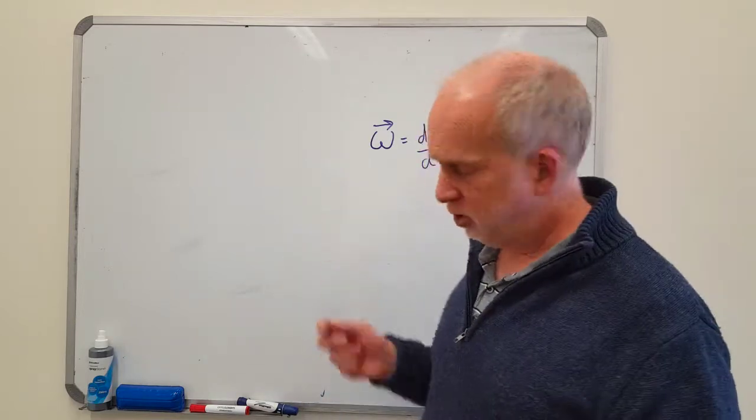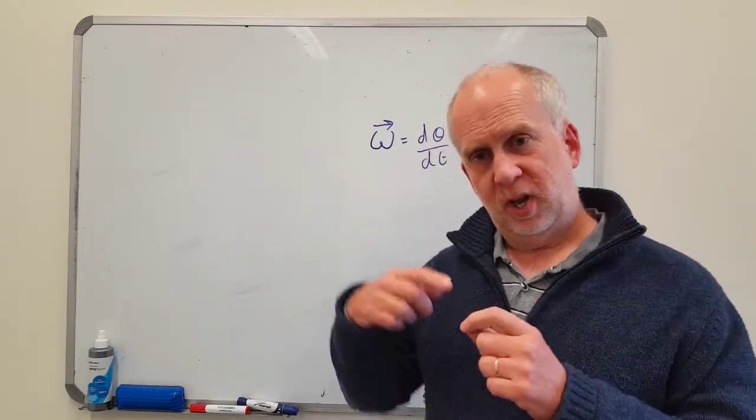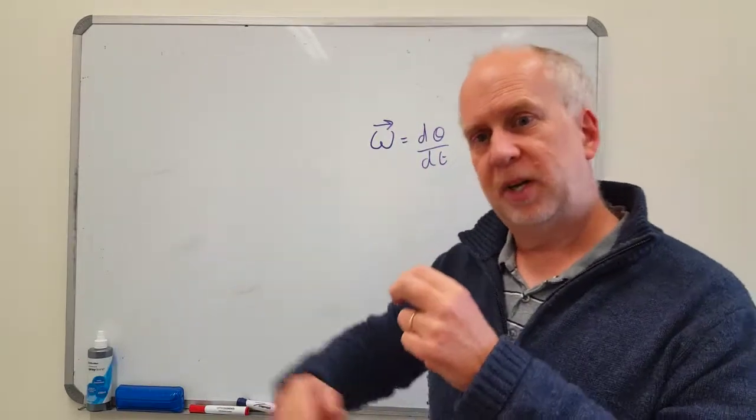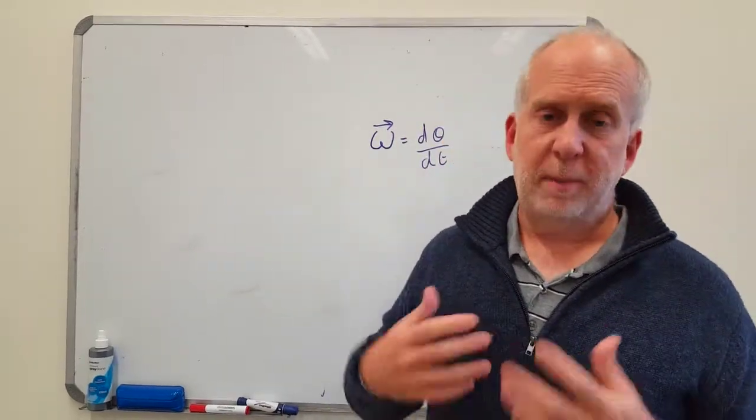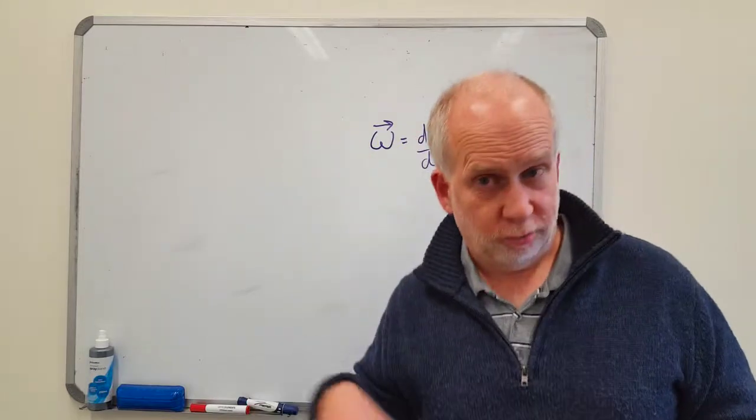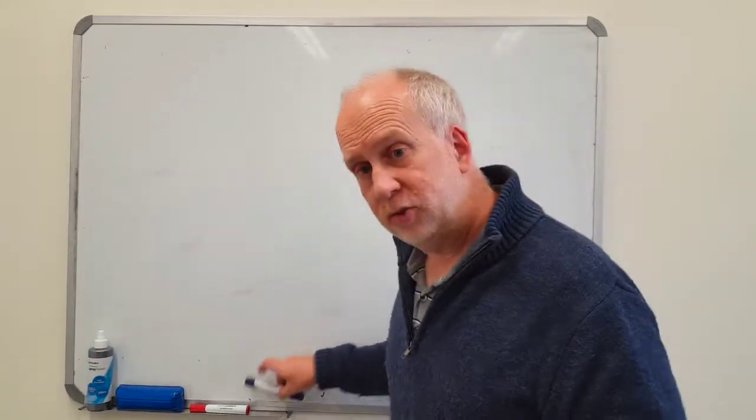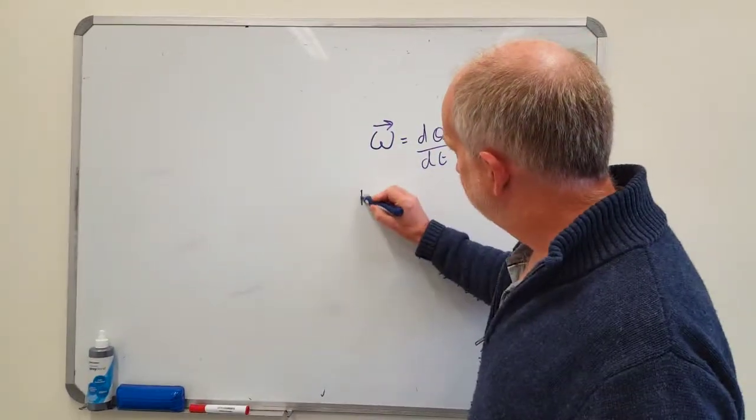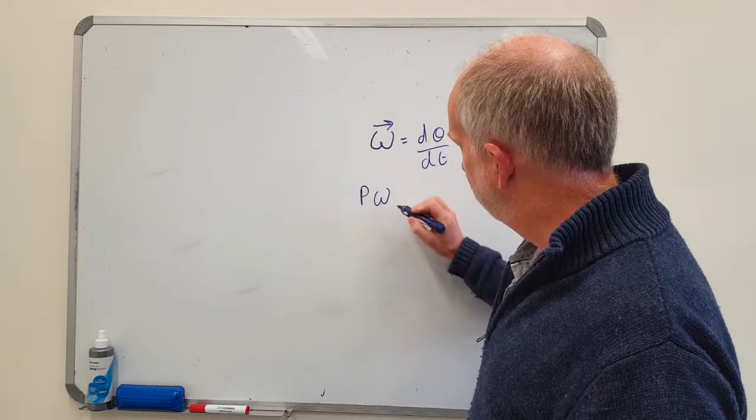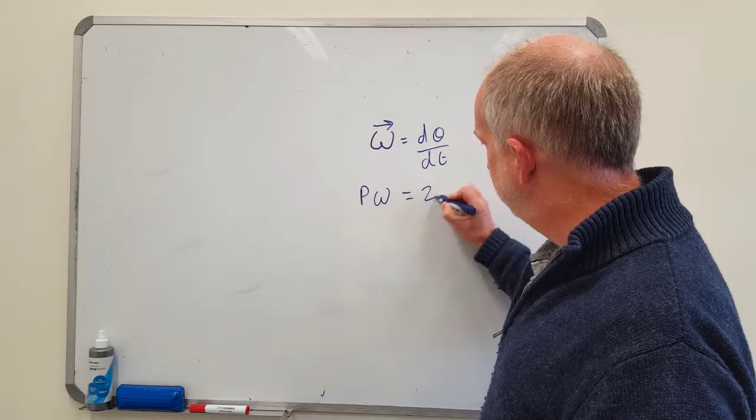How are they related? Well the period is the time it takes something to rotate completely around. That means it must go by an angle of 2 pi radians. So that means the period times the angular velocity must equal 2 pi.